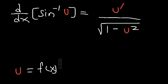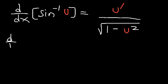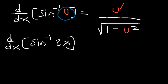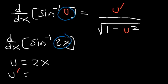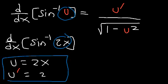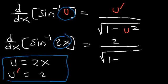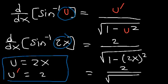Let's apply this formula to a particular problem. If we want to find the derivative of inverse sine of 2x, we can see that u is equal to 2x, and u prime is the derivative of 2x, which is 2. All you've got to do is plug it into the formula. So the derivative of inverse sine of 2x is 2 divided by the square root of 1 minus 2x squared, which simplifies to 2 over the square root of 1 minus 4x squared, since 2x squared equals 4x squared.